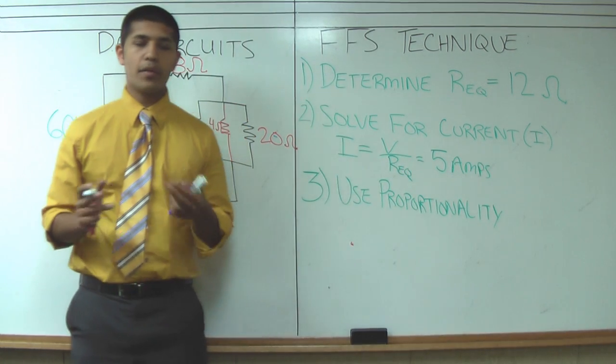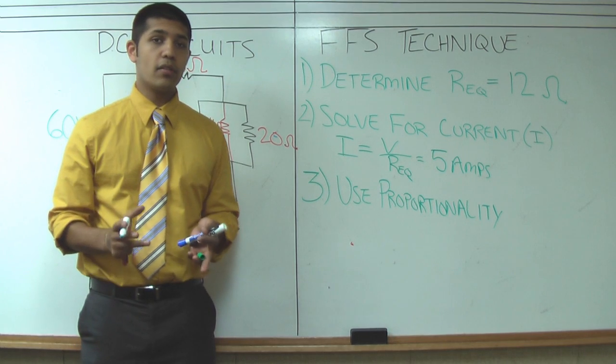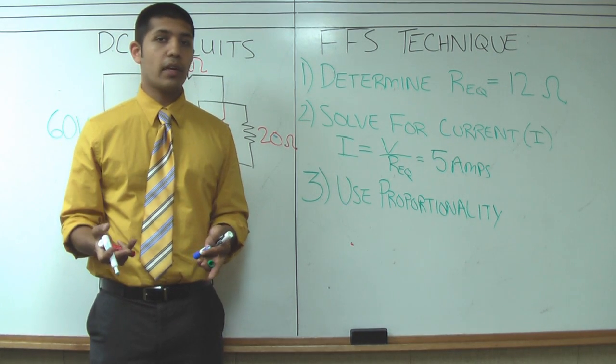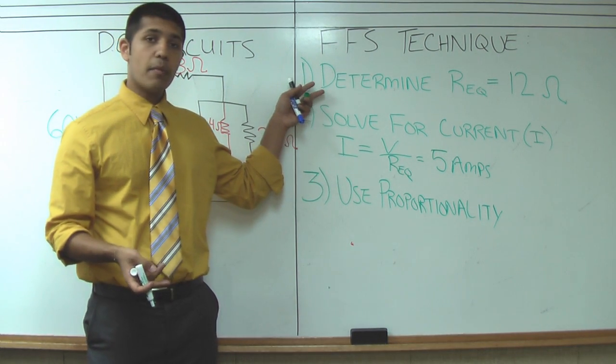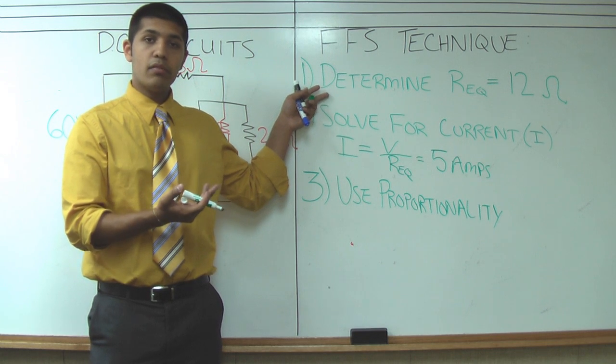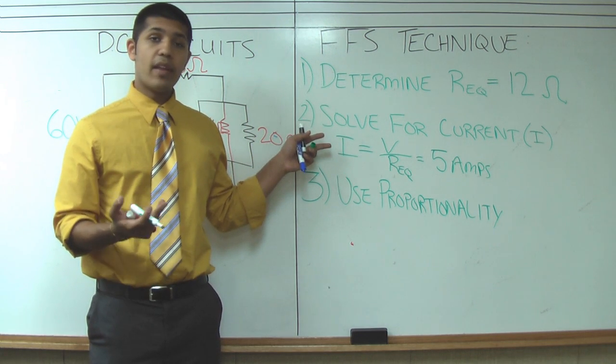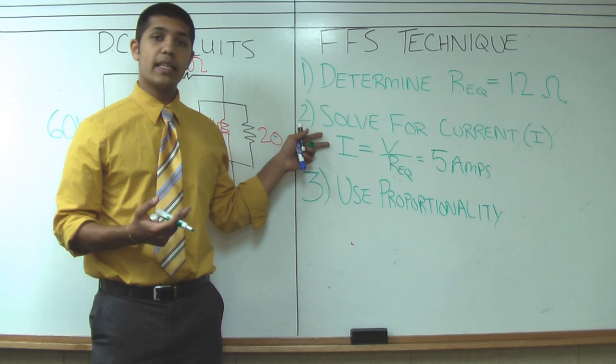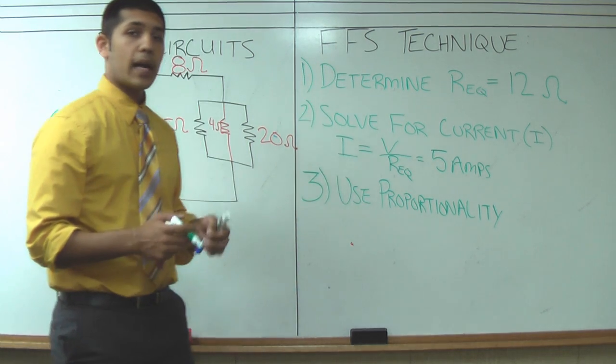Alright, now the first two steps are really the most important. If you can't do those then you won't be able to move any further throughout the circuit. So again the first step was to determine the REQ, 12 ohms, and then once we have that information it's pretty easy for us to get the current which is 5 amps. Alright, now this is where it gets a little bit tricky.